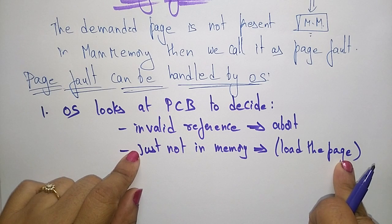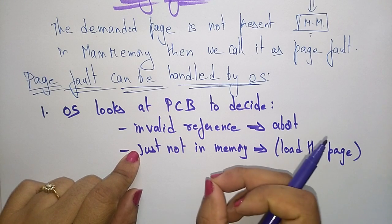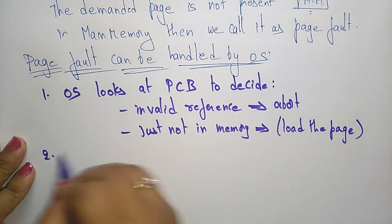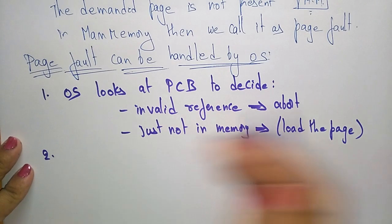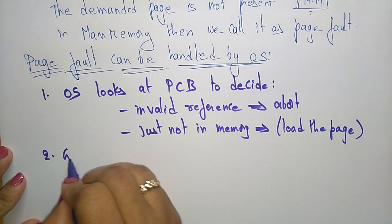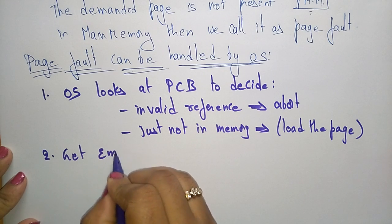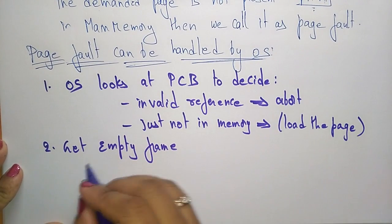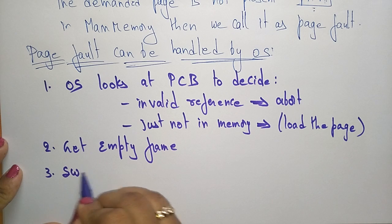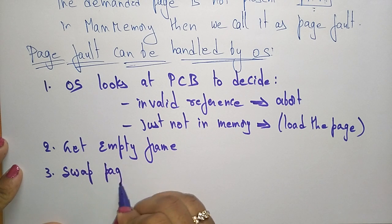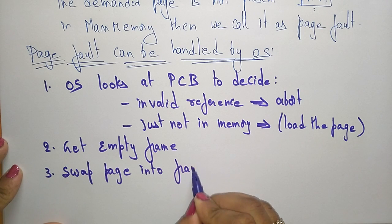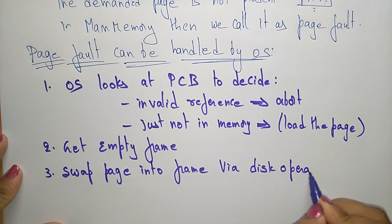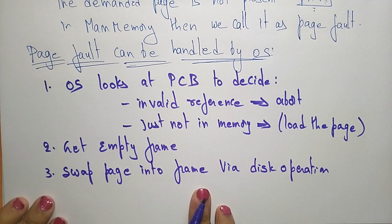How does it load the page to the main memory? It takes the page from secondary memory and stores it in the main memory. First it gets an empty frame, then it swaps the page into the frame via a disk operation.